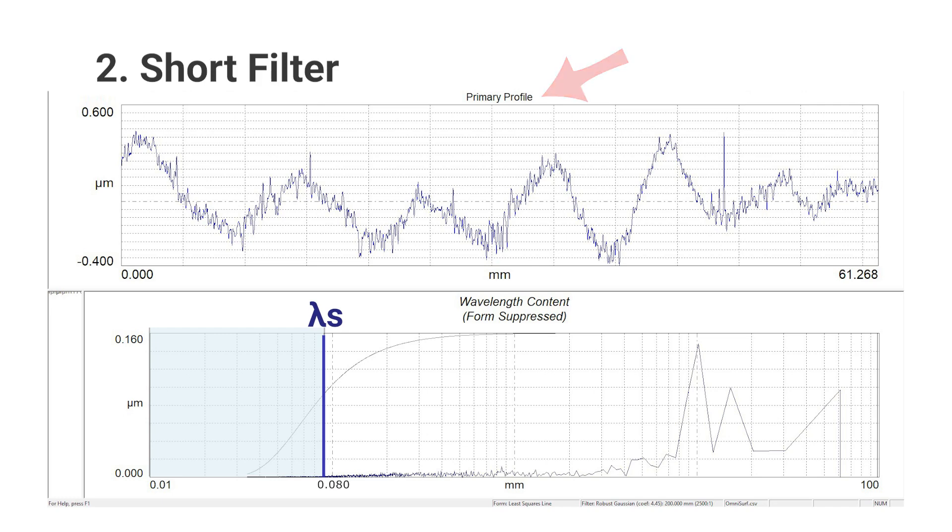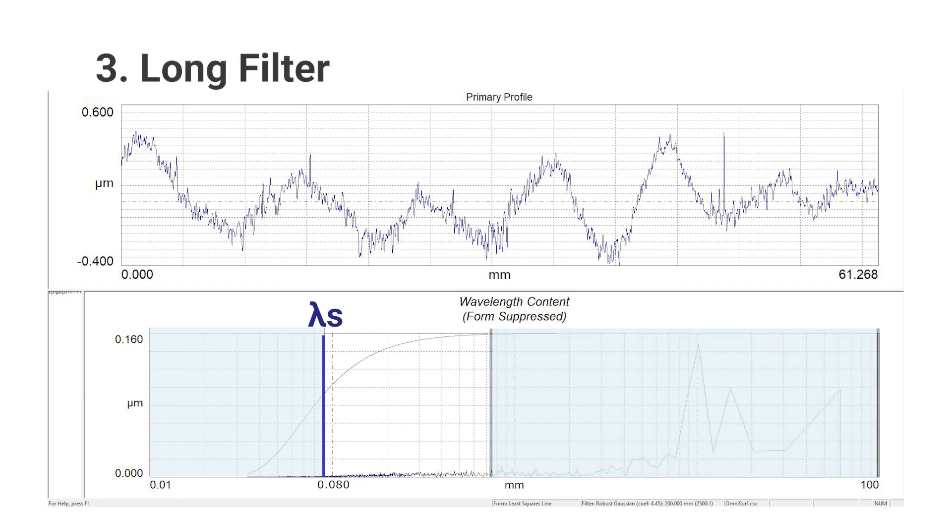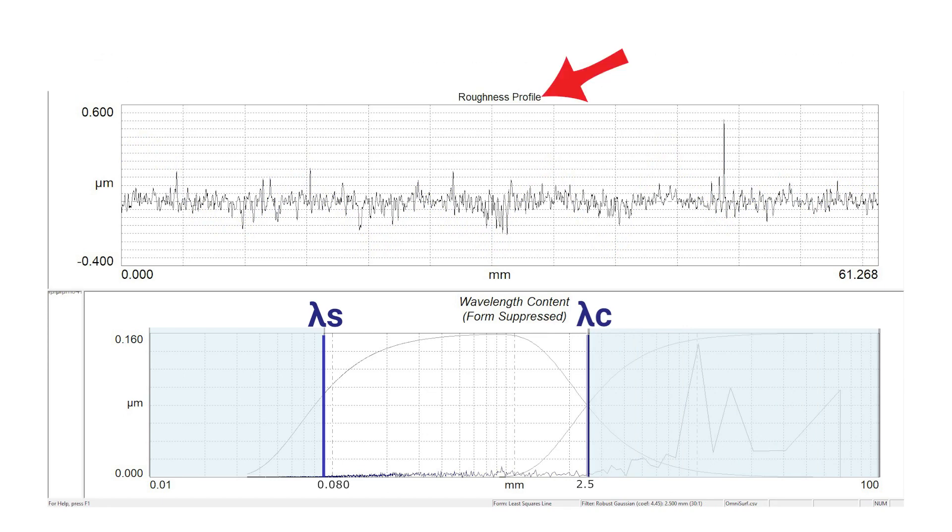Now, we need to provide an upper limit for the roughness band. We do that by applying a long spatial wavelength filter, which divides the primary profile data into short spatial wavelength roughness and longer spatial wavelength waviness. The long filter will be applied at the roughness long wavelength cutoff, or lambda c. After applying the short filter and the long filter, the remaining profile data is what we call the roughness profile.